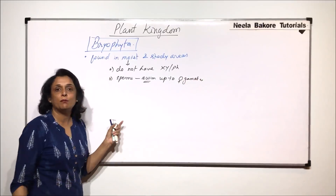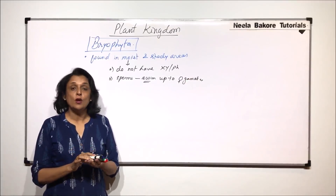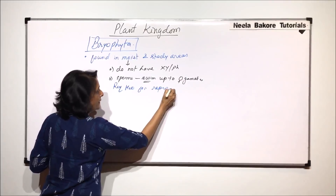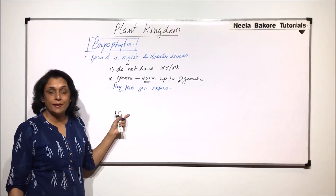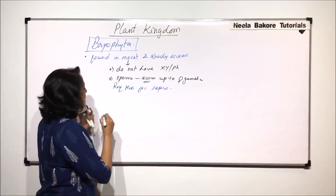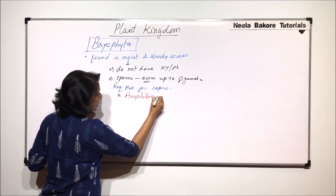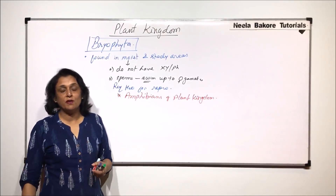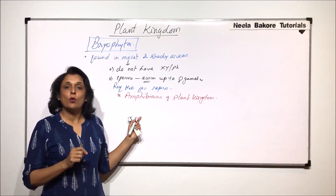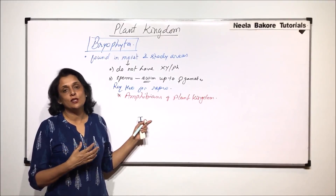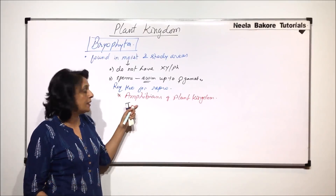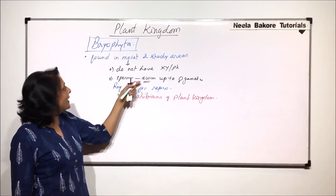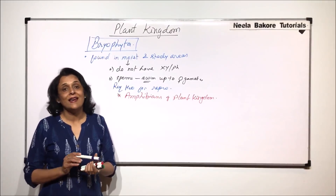When we use the word 'swim,' that means a liquid medium must be present so that the male gametes can reach the female gametes. They require water for reproduction because if the sperms do not reach the egg, fertilization will not take place. For this reason, Bryophytes are known as the amphibians of plant kingdom — just like frogs, which are dependent on water for reproduction, the male gametes swim up to the female gametes and for this a thin layer of water is required.